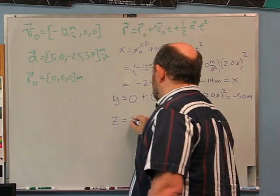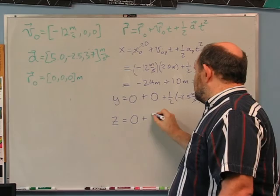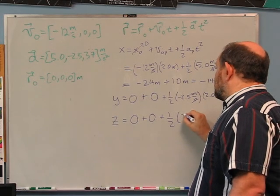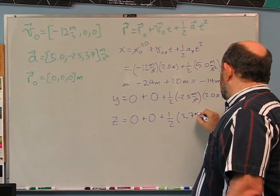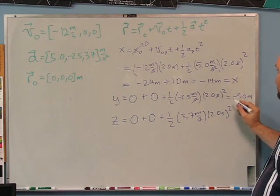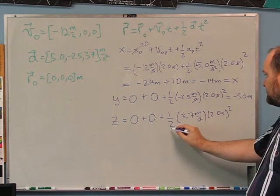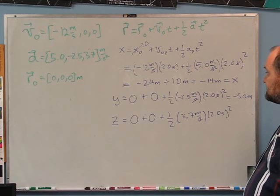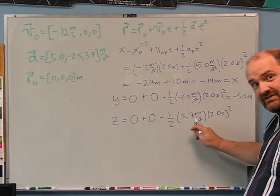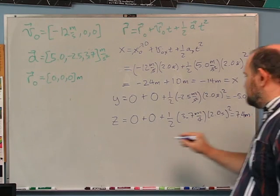For z: z starts at 0, v₀z = 0, so those vanish. az = 3.7 m/s², t = 2.0 s. ½ times (2²) = 2, times 3.7 gives 7.4. So z = 7.4 meters.